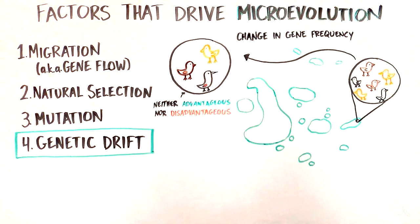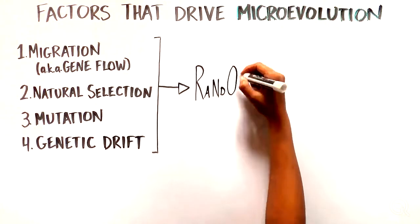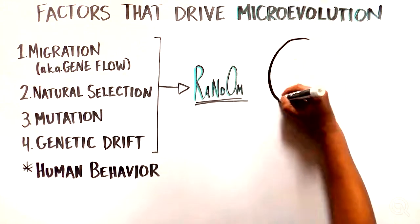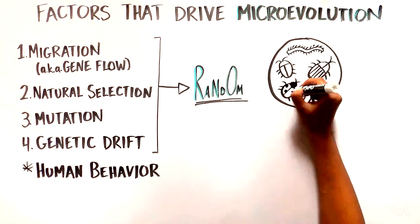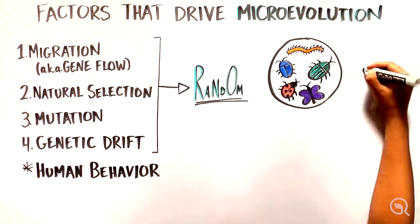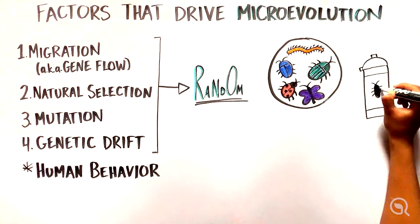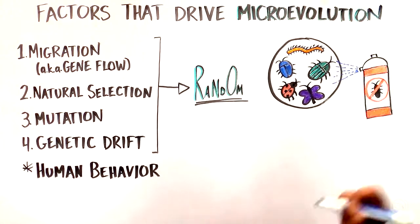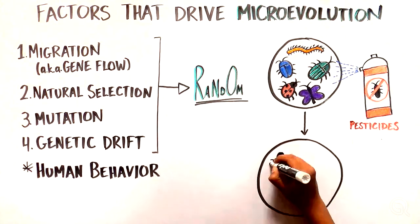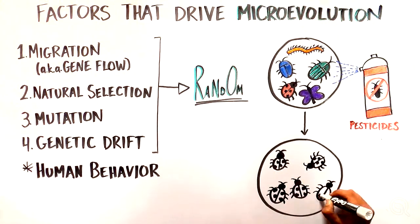While these examples we've talked about so far refer to random events driving evolution, there are examples of how human behavior can drive microevolution. For example, in response to pesticide use, some insects have developed resistance to those chemicals, allowing them to survive when exposed to those pesticides.